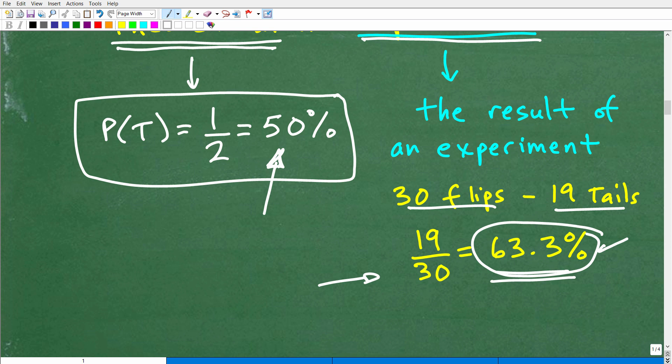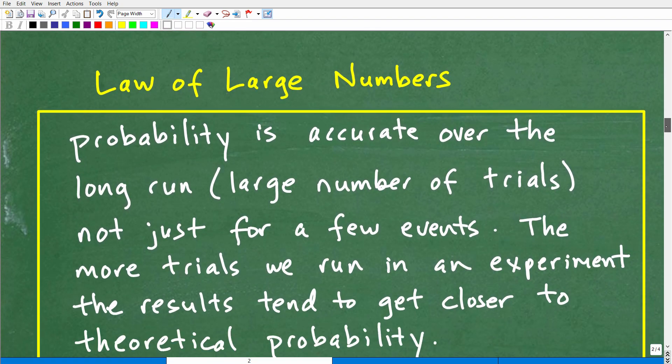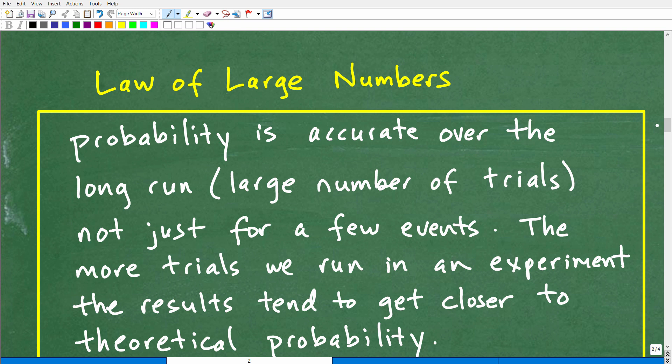The first is theoretical probability. And that's what we're doing with this definition of probability. We're just trying to get what is a theoretical expected outcome of this event occurring? So, again, the probability of this fair coin being a tail, we have a one out of two outcomes. So, that's 50%. That's theoretical. We would expect 15%. But we have this other probability, and that's called experimental. Let's suppose we're like, well, let's go ahead and put this to the test. So, here, what we could do is run an experiment.